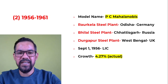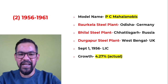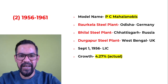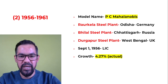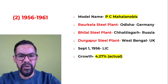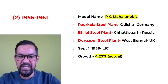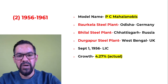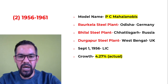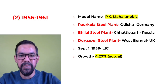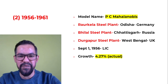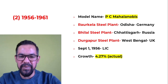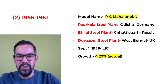The Second Five Year Plan ran from 1956 to 1961 and was based on the PC Mahalanobis model. The key focus area was industrial development. Three major steel plants were set up during this plan — at Raurkela, Bhilai, and Durgapur.